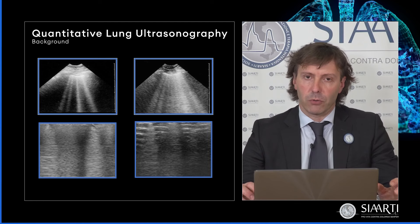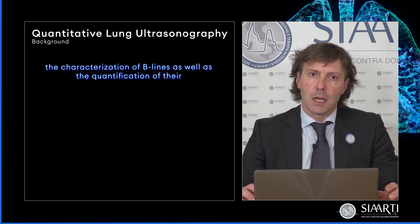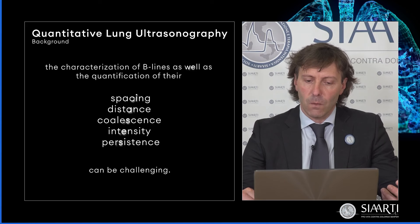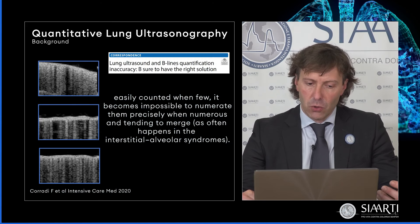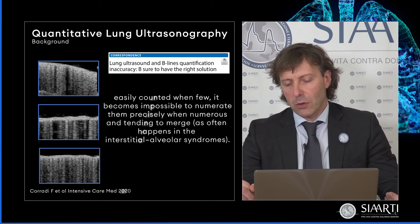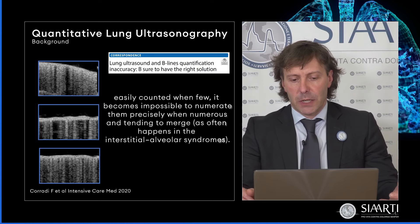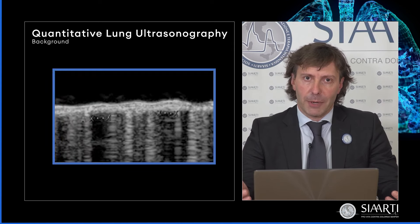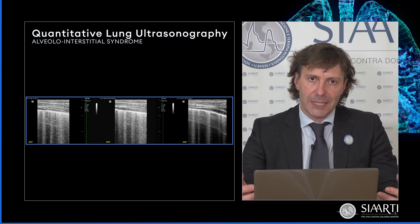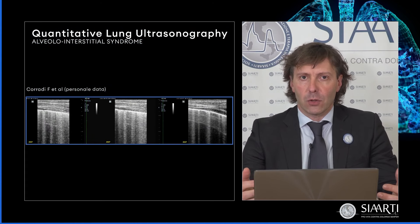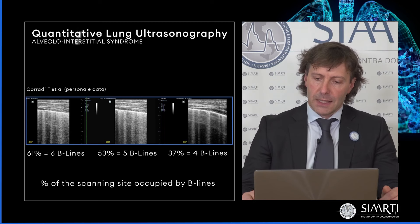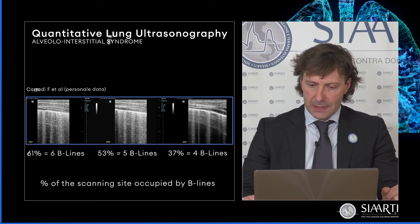È vero che possono essere anche semplicemente contate le linee B quando sono poche. Tuttavia, quando iniziano a diventare più numerose e tra loro confluenti, diventa difficile oggettivarle in una maniera realmente quantitativa. Le ultime raccomandazioni suggeriscono di quantificare lo spazio della scansione ecografica occupata dalle linee B, o della sindrome interstiziale ecografica, rispetto allo spazio risparmiato, fornendo una percentuale soggettiva della gravità della sindrome interstiziale.